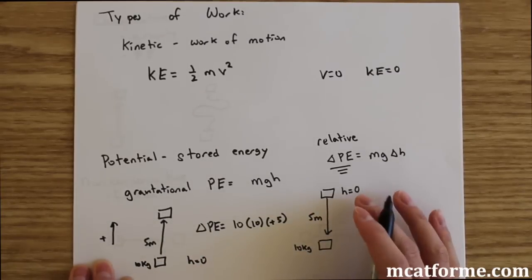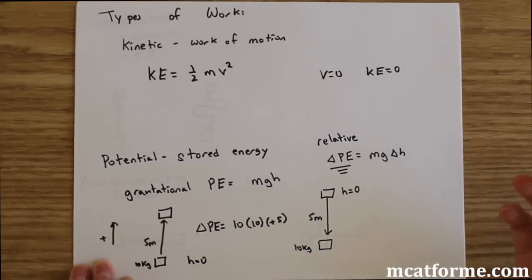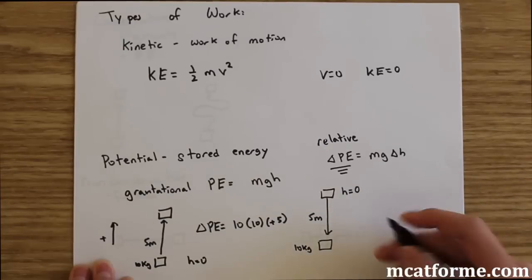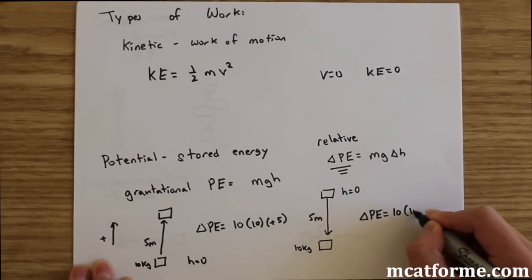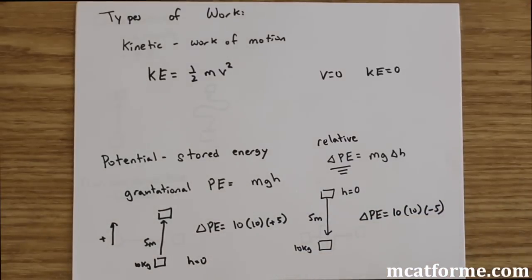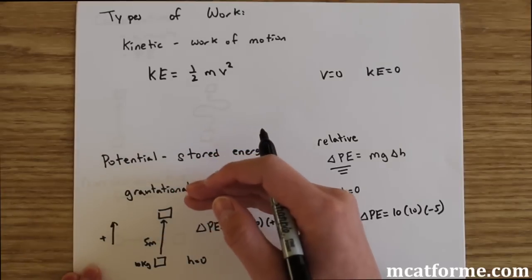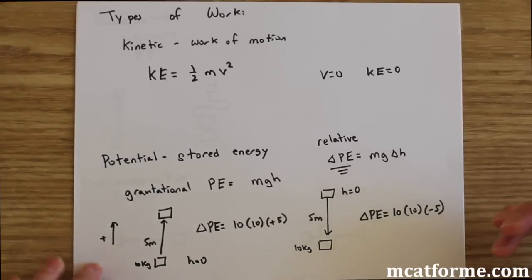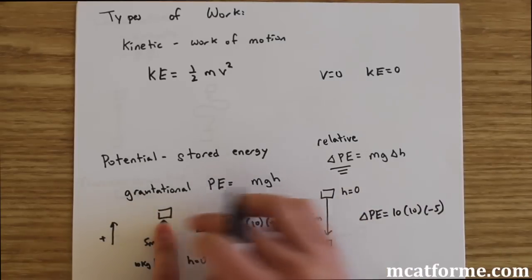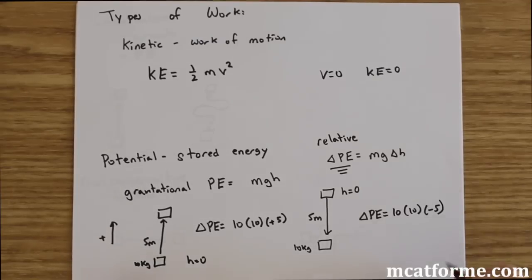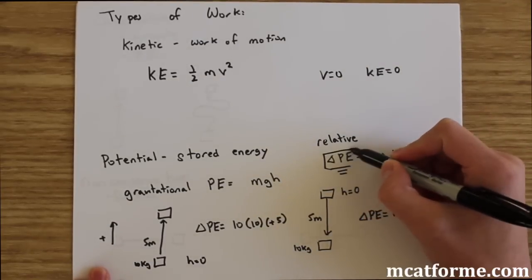In another example, if we set the elevated position as h equals 0 and move the object down 5 meters, the height becomes negative 5, so the change in potential energy equals 10 times 10 times negative 5. What's most important is the change in potential energy, not a fixed absolute value, because the reference height of zero is always arbitrary.